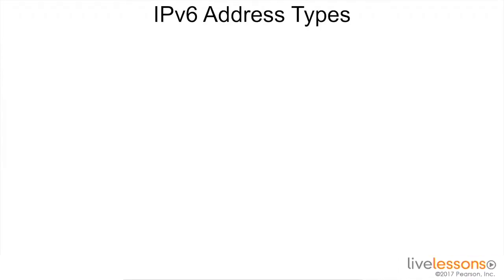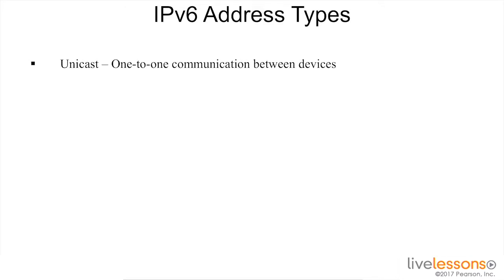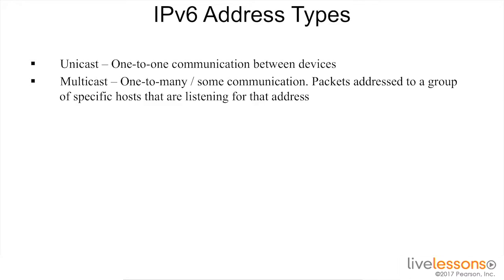There are three IPv6 address types. The first address type is unicast, or one-to-one communication between devices. The second address type is multicast, or one-to-many, or one-to-some communication.